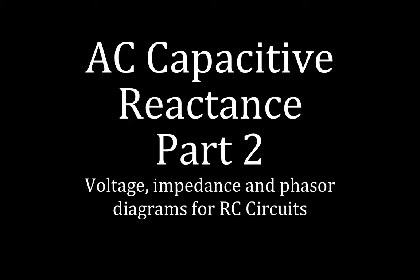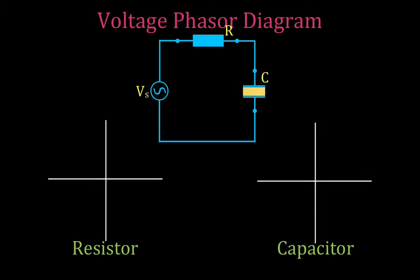Today's video is entitled AC Capacitor Reactance Part 2, and in this video I'm going to go over conceptually voltage, impedance, and phasor diagrams for RC circuits. This is the circuit diagram we're going to be talking about — we have an RC circuit with a resistor, a capacitor, and an AC voltage source.